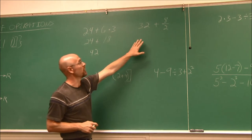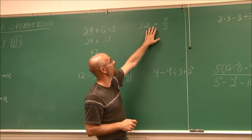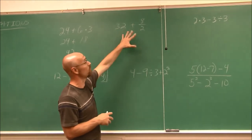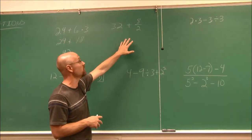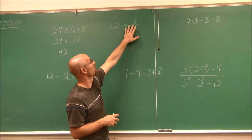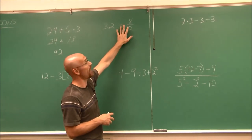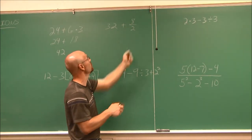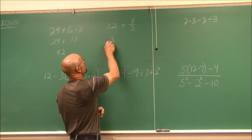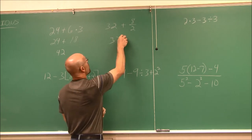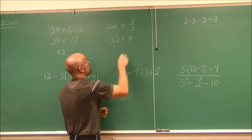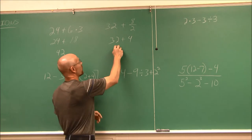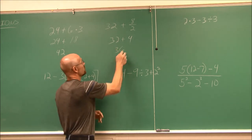Let's look at this example. We have addition and division. Assessing the operations: I see division, which must be done before addition. 8 divided by 2 is 4. Now I can do the addition: 32 plus 4 is 36.